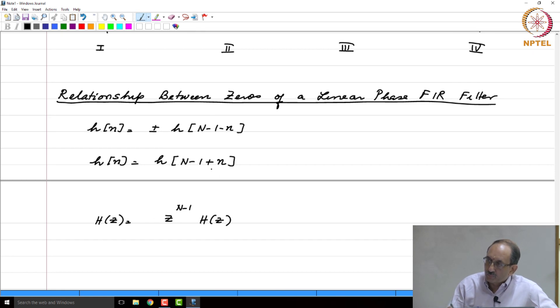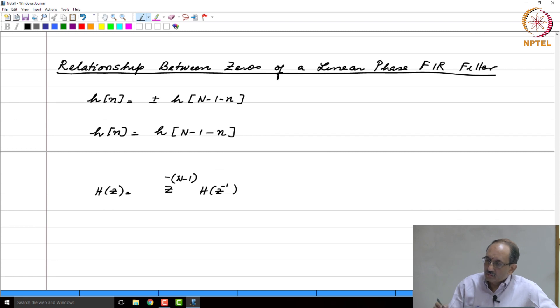Now, instead of plus n, if you now take this expression and then replace plus n by minus n, wherever Z is there you have to replace Z by Z inverse. Therefore, if this were now the case, all you need to do is replace Z by Z inverse. Therefore, this is now the relationship. If this were the symmetry in the time domain, in the transform domain this is how the transforms are related.